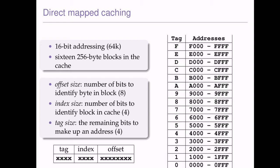If we had 16-bit addressing and a 256-byte block in the cache, how would we figure out our offset? If we have 256-byte blocks, we'll need 8 bits to represent each of the individual bytes within the block. 2 to the power of 8 is 256, so that's enough combinations to identify each individual byte — that's the offset size. Now we have 16 blocks, so that's 2 to the power of 4, and we need 4 bits to represent each block in the cache — that's our index size. Then we need to make up a valid 16-bit address; we've used 12 bits so far, so we use the final 4 for the tag size.